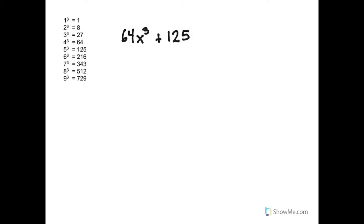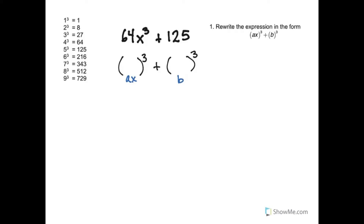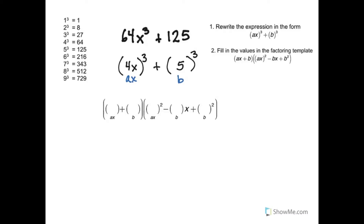64x cubed plus 125 is a sum of cubes, and I want to factor it using a template. I want to know what's cubed. So 64 is 4 cubed and x cubed is x cubed, so I'm going to fill in 4x there — that's the thing that's cubed to give me the first term. And 125 is 5 cubed. So I've rewritten it as a sum of cubes where I can see what has been cubed. Now here's the template. You're going to have to memorize this unless you're allowed to use a note card. The next step is to fill in the values for ax and b into this factoring template.